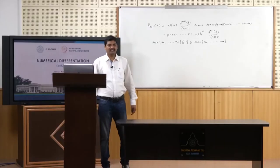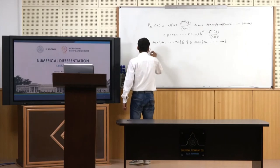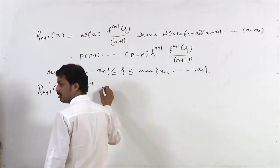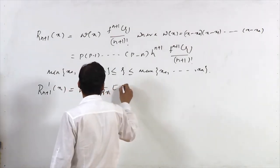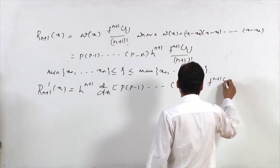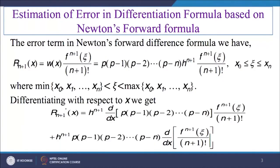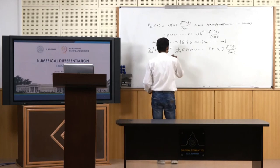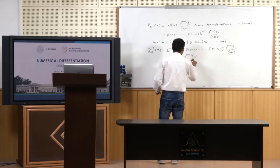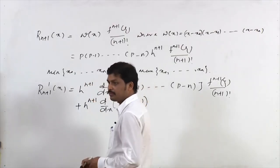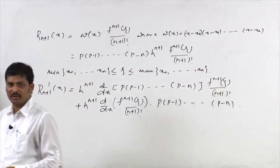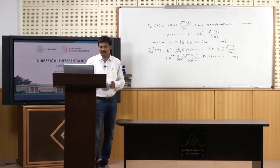If we want to differentiate this error term, then R'_(n+1)(x) can be written as h^(n+1) times d/dx of [p(p-1)...(p-n)] times f^(n+1)(zeta)/(n+1) factorial, plus h^(n+1) times d/dx of f^(n+1)(zeta)/(n+1) factorial times the product of p terms, since zeta is a function of x and must also be differentiated.